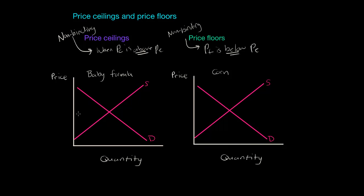Looking back at our markets for baby formula and for corn, go ahead and label our original equilibriums of PE and QE. What if the government were to establish a price ceiling that was actually above PE? What impact is this going to have on the market for baby formula? And what if there's a price floor set below PE in the market for corn? Let's draw this horizontal line here representing the maximum price.